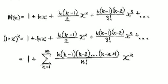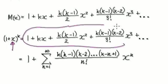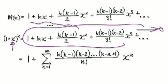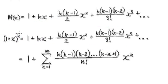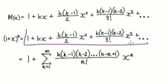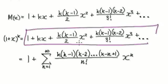So when you search for convergence, it's really you searching for values of x for which this whole thing here, all the way to infinity, will be exactly equal to this thing here — where you can be 100% sure of that. That's what convergence means. So now let's search for convergence here.